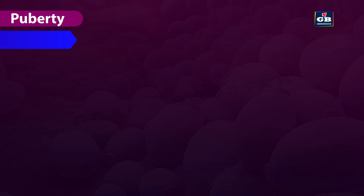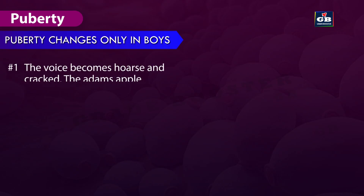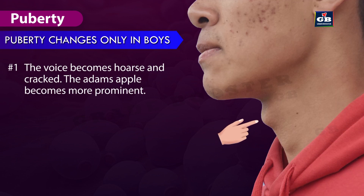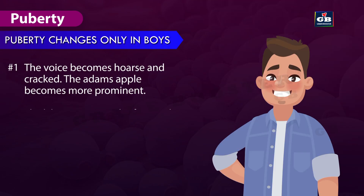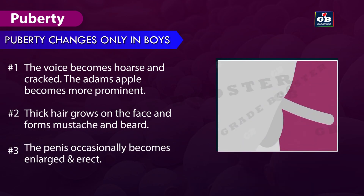Changes that take place only in boys during puberty: 1. The voice becomes hoarse and cracked, and the Adam's apple becomes more prominent. 2. Thick hair grows on the face and forms mustache and beard. 3. The penis occasionally becomes enlarged and erect.